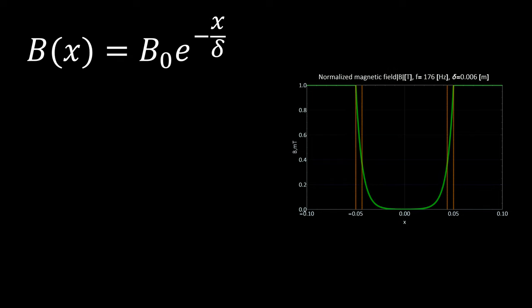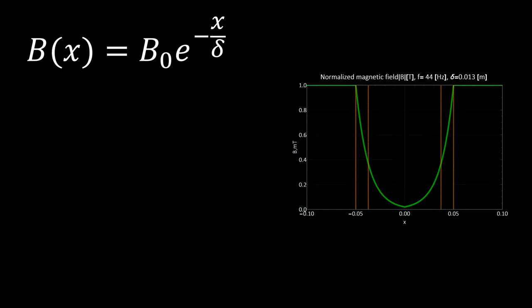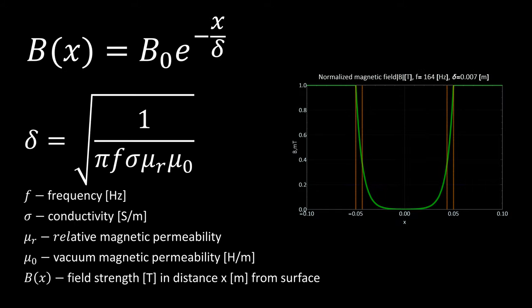By definition, in distance of one skin depth, magnetic field drops e times. In other words, only around 37% of starting magnetic field is left after one skin depth. Formula for skin depth is shown in a displayed equation.